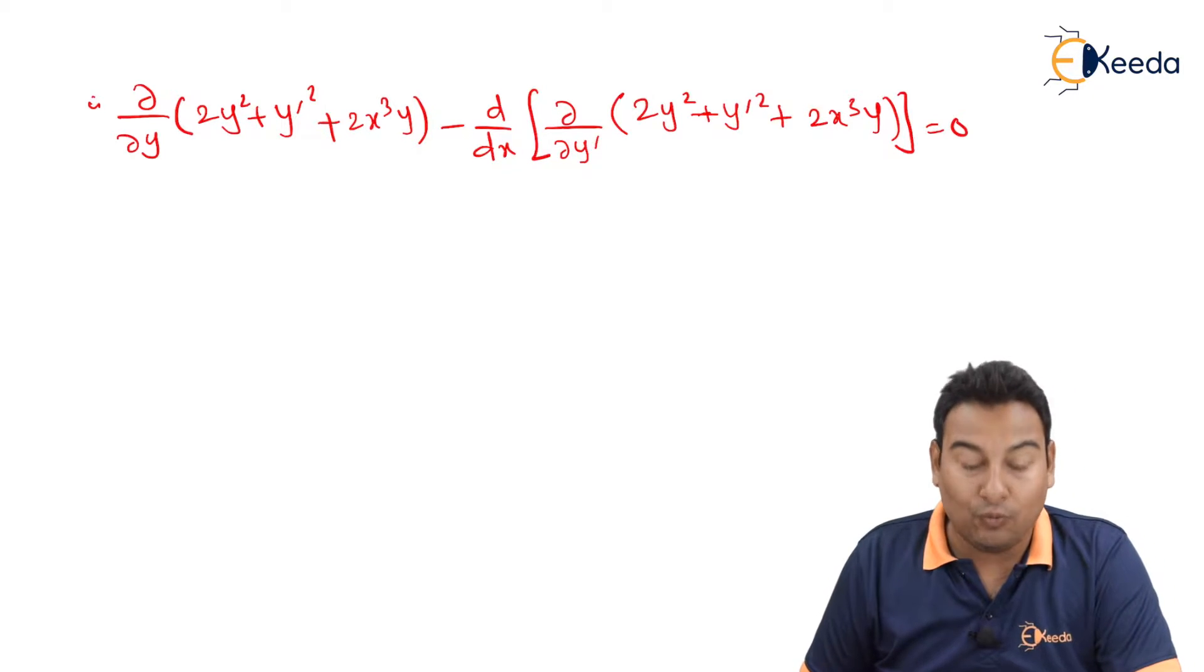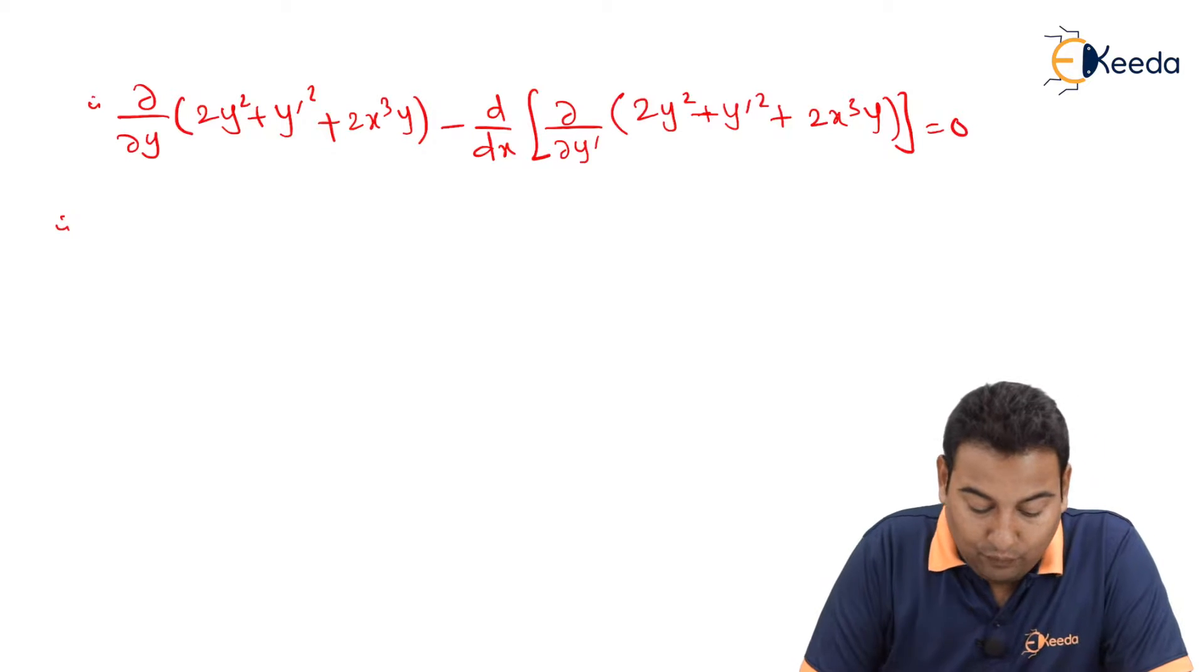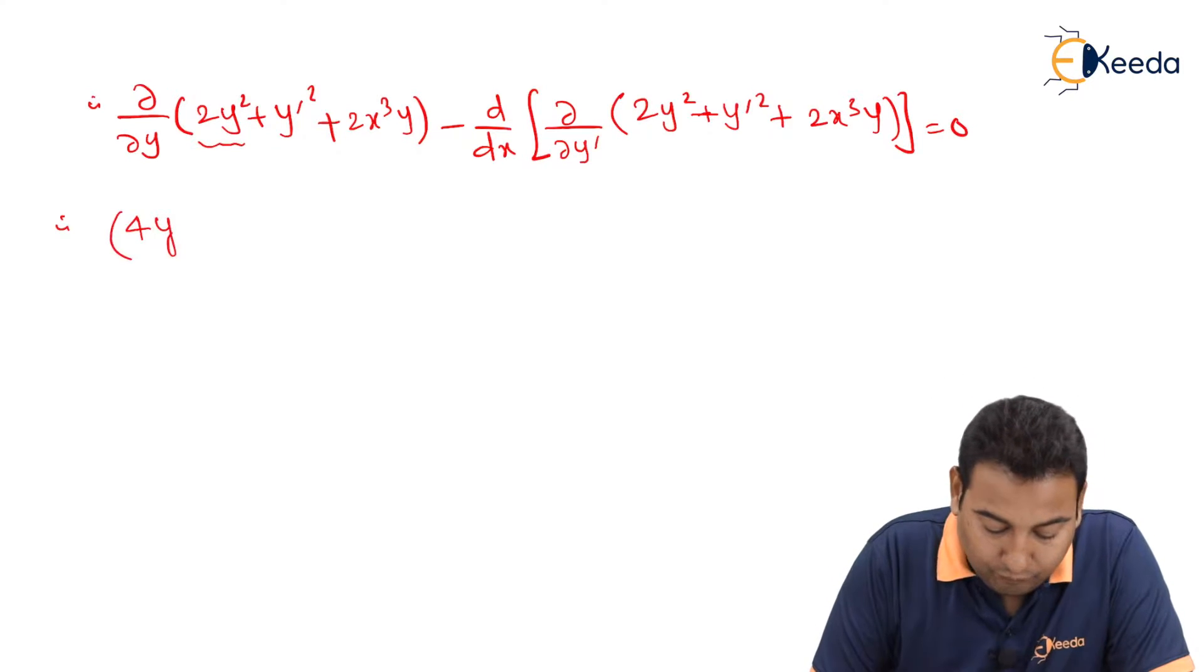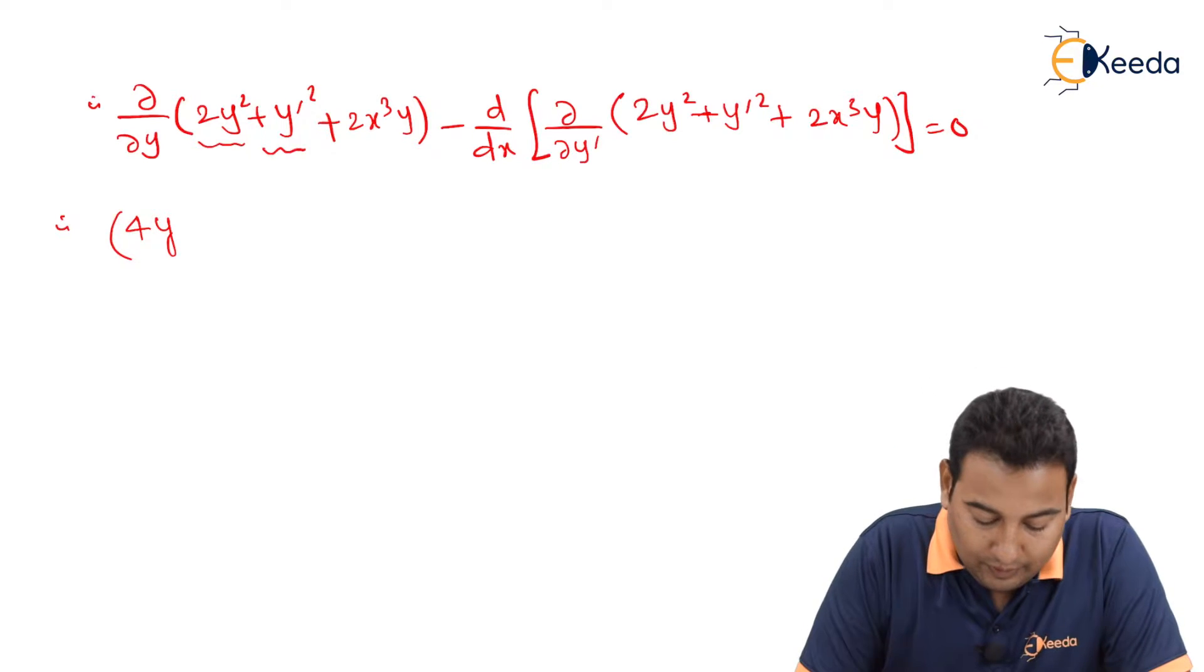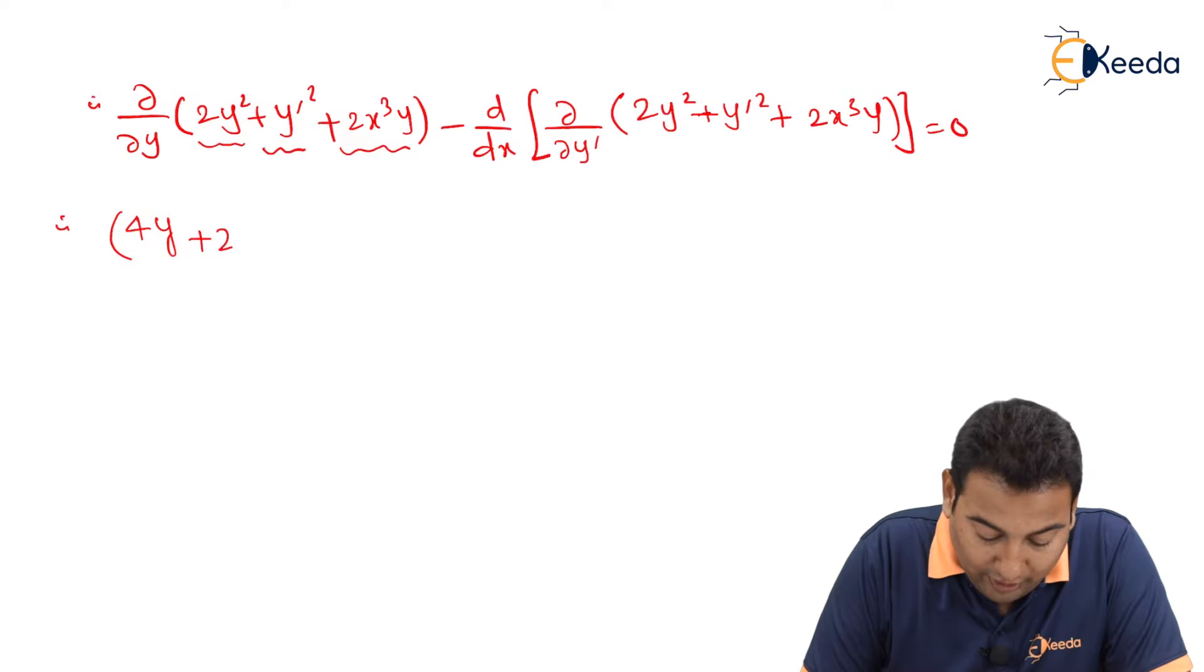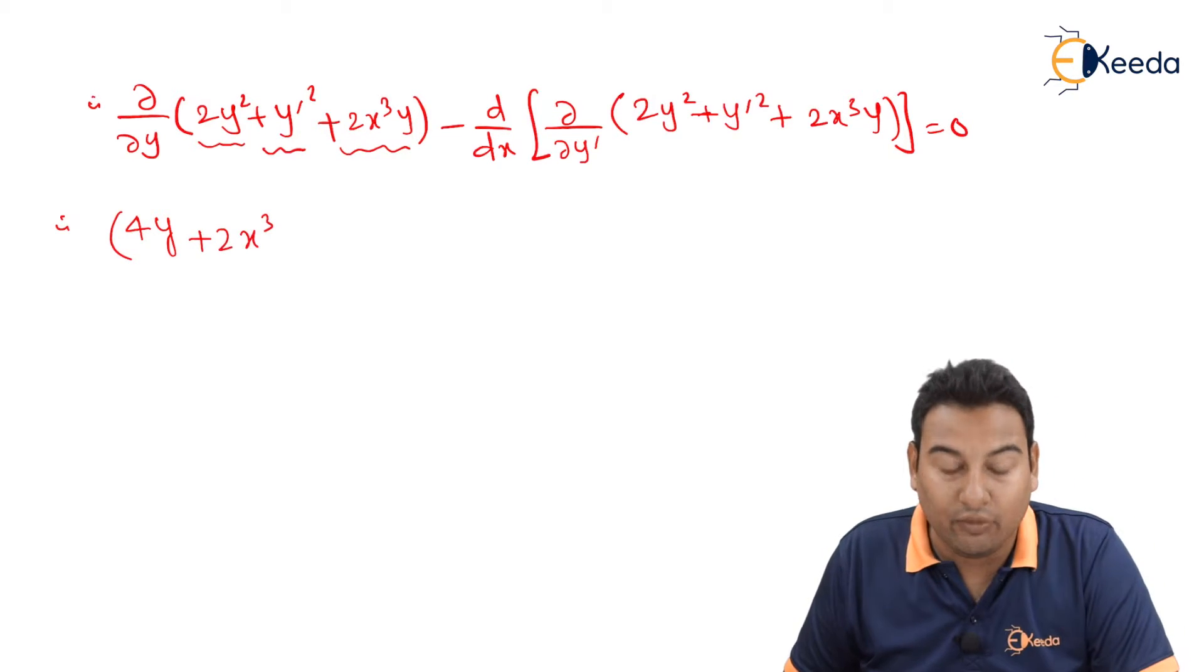Let's differentiate with respect to y. 2y square derivative is 4y, this derivative is 0, and here with respect to y, 2x cube is constant, y derivative is 1.